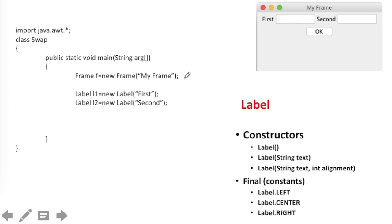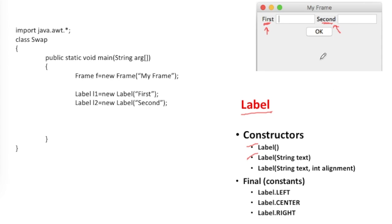Next I want two labels — first and second. Label is an AWT class and it has three constructors: one with no parameters, one where you can mention the string you want to display, and a third where you can also mention the alignment of that text — whether you want it center-aligned, left-aligned, or right-aligned. You can use the constants defined in the Label class: Label.LEFT, Label.CENTER, or Label.RIGHT to specify alignment.